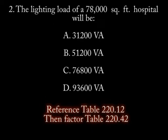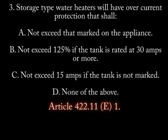Number 2. The lighting load of a 78,000 square foot hospital will be: A. 31,200 volt amps, B. 51,200 volt amps, C. 76,800 volt amps, D. 93,600 volt amps.